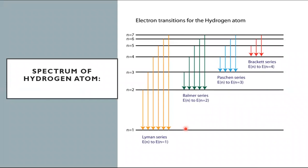Now let's see how the spectrum of the hydrogen atom is formed. Different energy states are represented as horizontal lines, with the principal quantum number taking values 1, 2, 3, 4, 5, and so on. When an electron transitions from any higher energy state down to quantum state n=1, a series of electromagnetic radiation called the Lyman series is generated, which falls in the ultraviolet region of the electromagnetic spectrum.